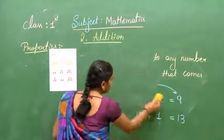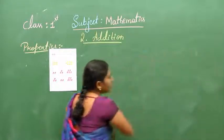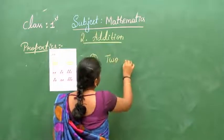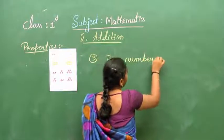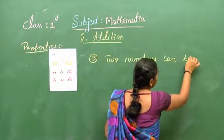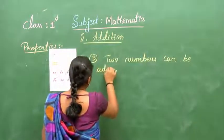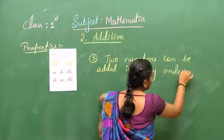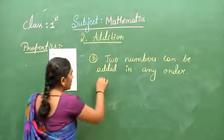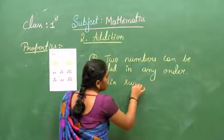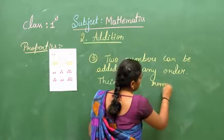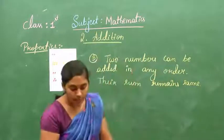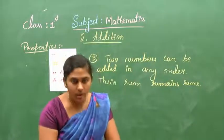The third property says that if you change the place of the numbers, the two numbers can be added in any order and their answer will be the same. The answer remains the same. For example, what we have in the third picture — we have ladybirds.